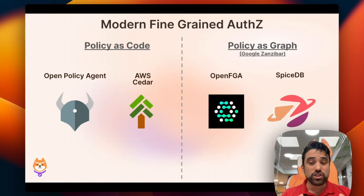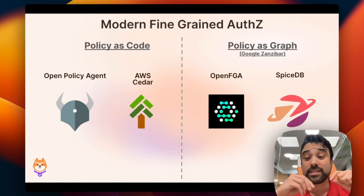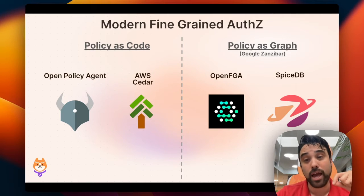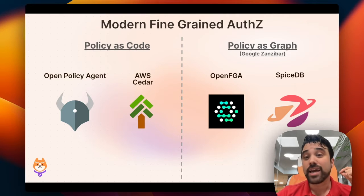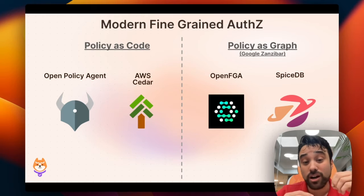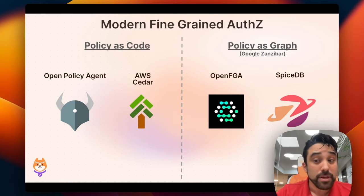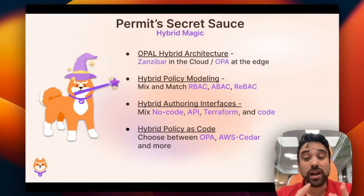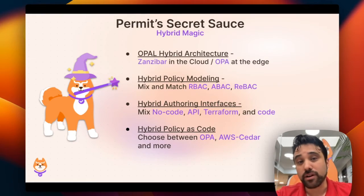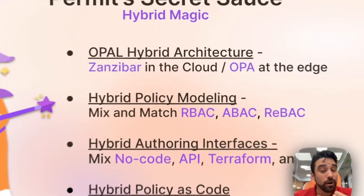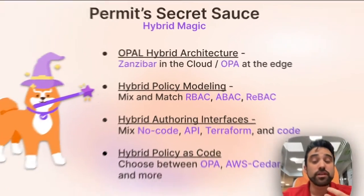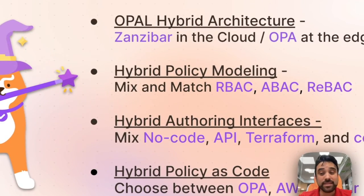It doesn't matter which camp you choose. What's important is that you connect this in an easy and malleable enough way into your app and code so you can switch as you need, and so you'll be able to leverage the different pros and cons that these solutions have — and maybe even mix them together. Permit will allow you to combine all of these together: policy as code and policy as graph, all the different policy models, and interchangeably switch between them.